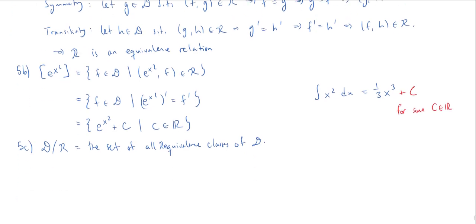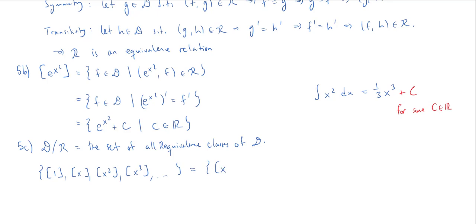Based on what we were doing before, two functions are only equivalent if they differ by a constant. So consider the following set: take the polynomial 1, take x, take x squared, take x cubed, and just keep going. This is the set of equivalence classes [x^n] where n ranges over all non-negative integers.